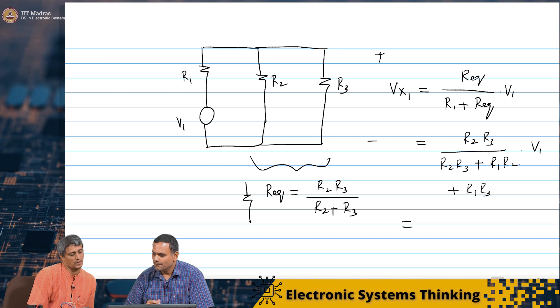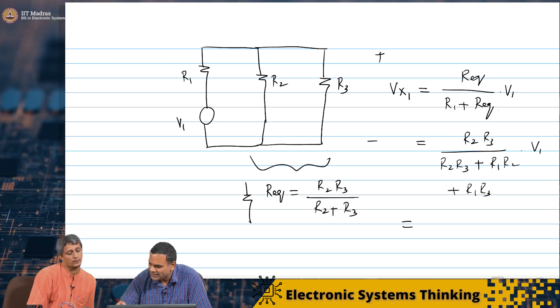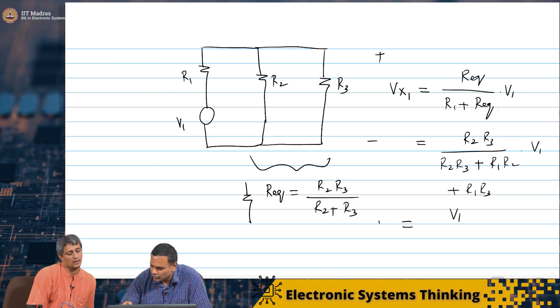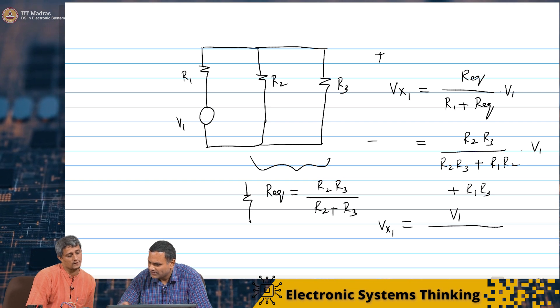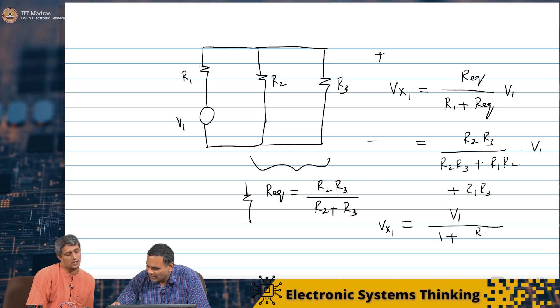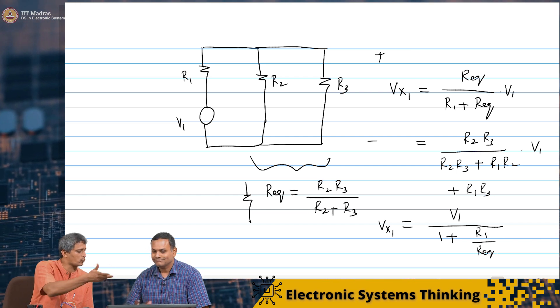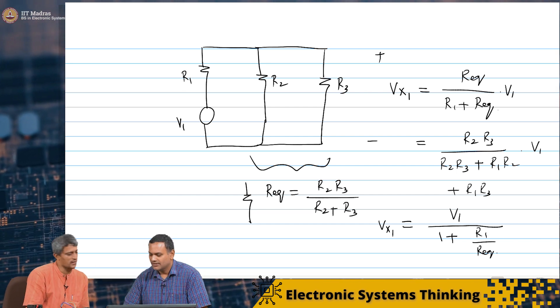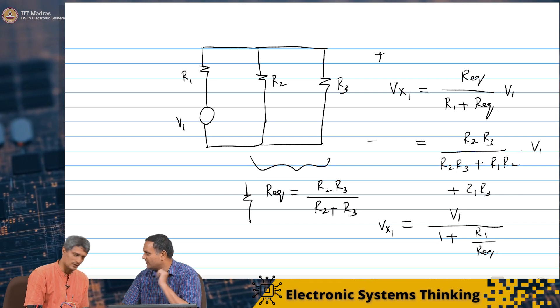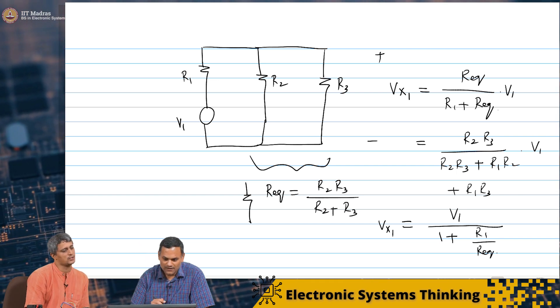So we will do that. So 1 by R equivalent. So you want to write this in terms of 1 by R equivalent. Perfect. So we will write it here. So this would basically be V1 by 1 plus R1 by R equivalent. And 1 by R equivalent is 1 by R2 plus 1 by R3. That is correct. So we know what this Vx1 is in this case.